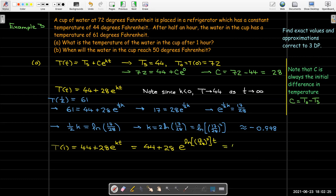Well, that's going to be 44 plus 28 e to the natural log of that fraction 17 over 28 squared raised to the power of t. Now I did that because I know the natural log and the exponential function are inverses of each other. And so that's going to give me 44 plus 28 times the fraction 17 over 28 squared raised to the power of t.